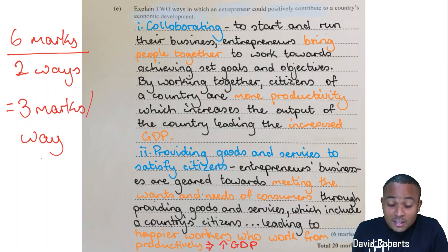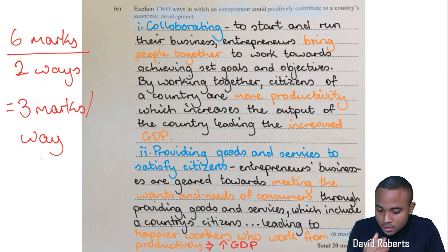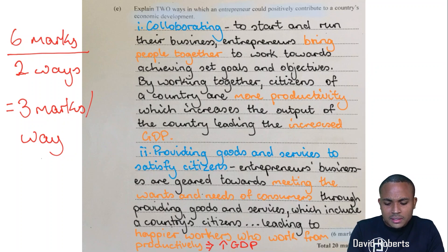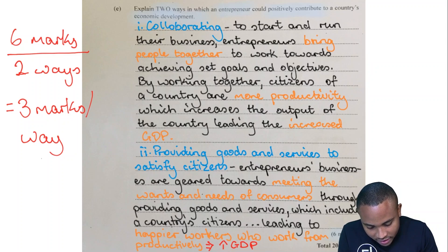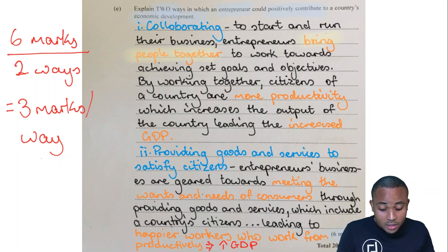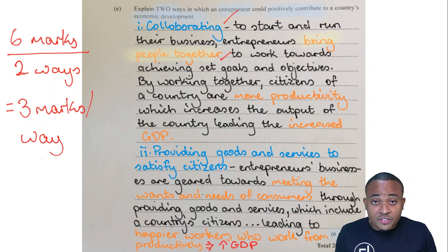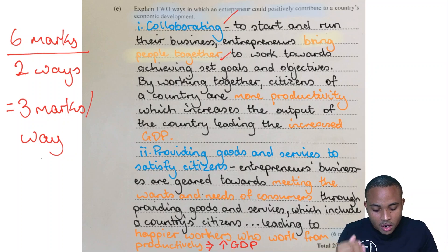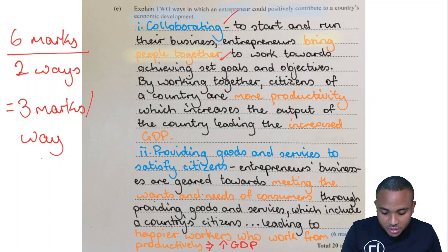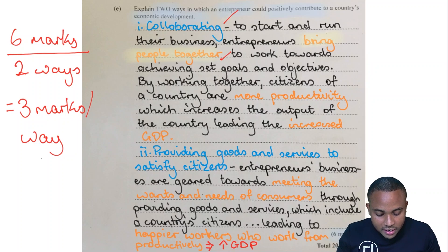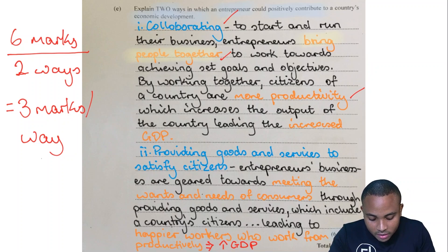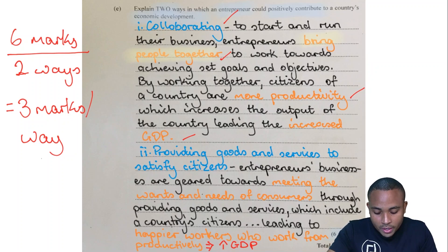Response one: collaborating. The entrepreneur is able to start and run their business by bringing together factors of production — bringing together people to work in order to achieve the set goals and objectives. First, a mark for stating collaborating, then explaining what it means. By working together, citizens are able to be more productive, which increases the output of the country, leading to increased GDP — which is economic development.